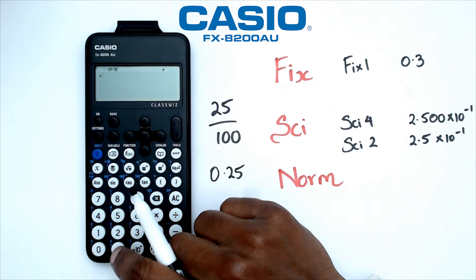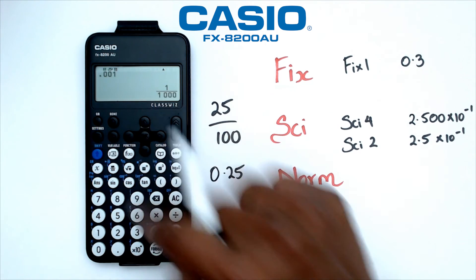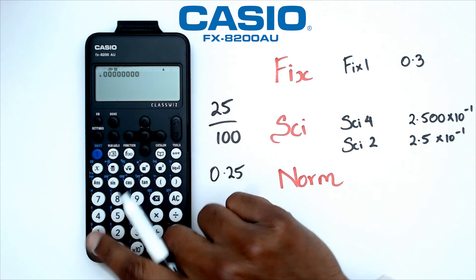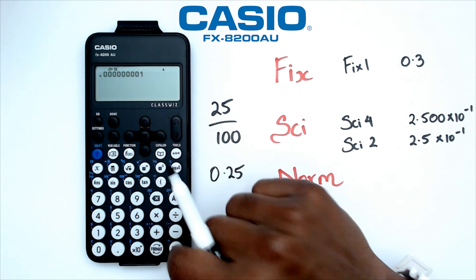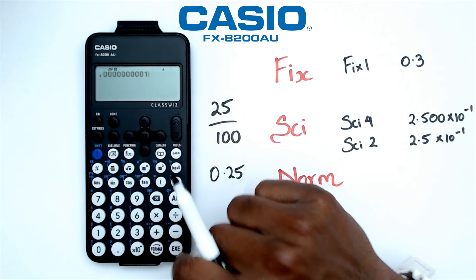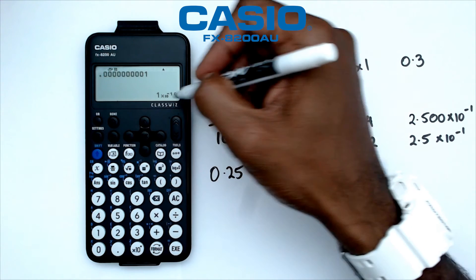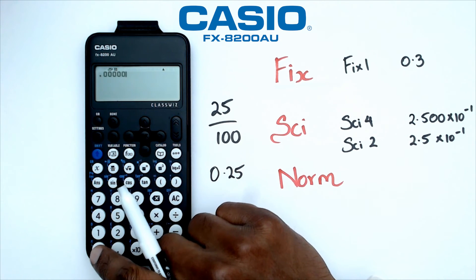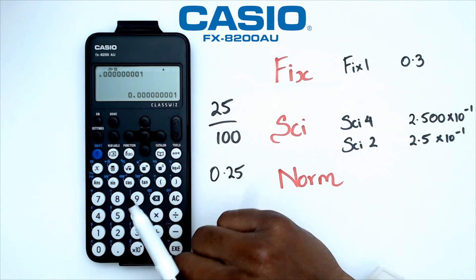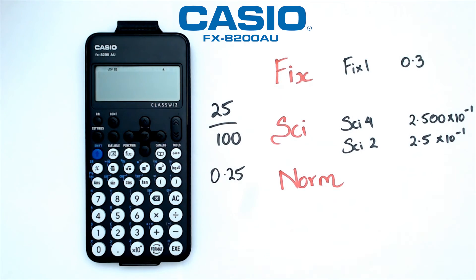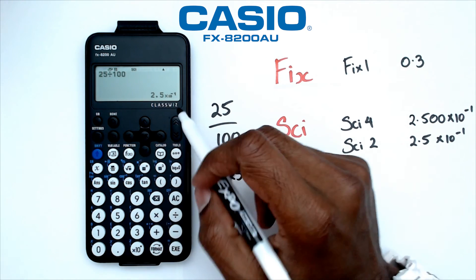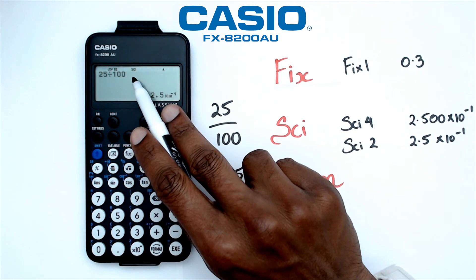If we go to something like 0.001, that's fine. But going further — four, five, six, seven, eight decimal places — calculators have around nine digits or nine decimal places they can display. Anything more than nine decimal places, it will rewrite that in standard form. Coming back to 25 over 100, it is a quarter, and right now it's giving me that particular notation because that's the format I've chosen.